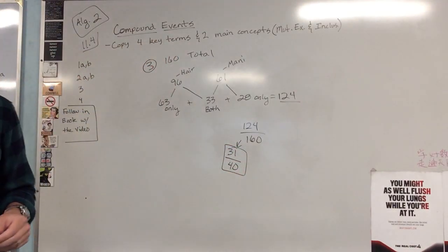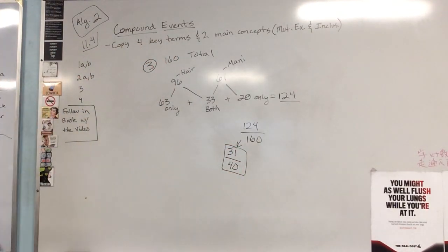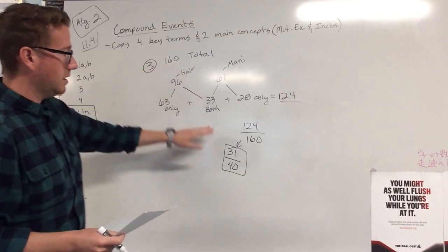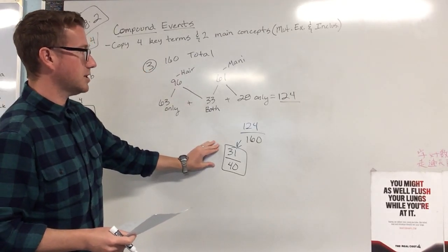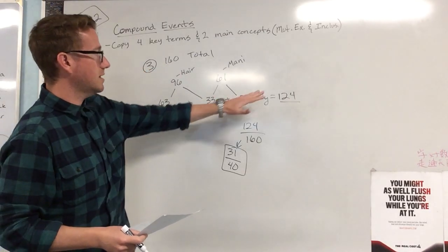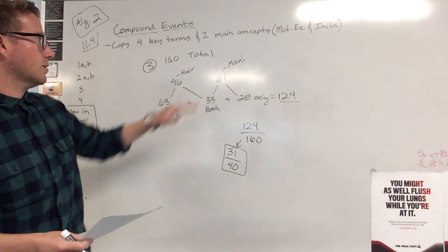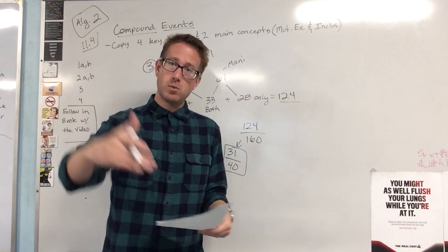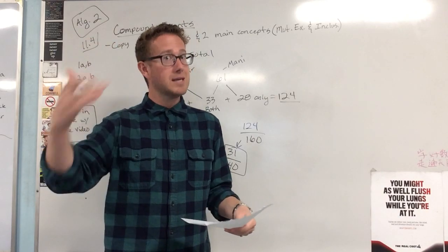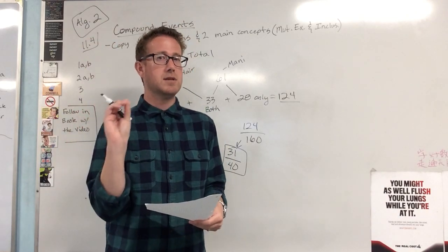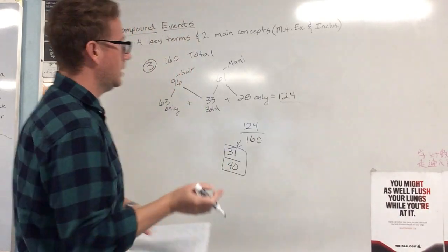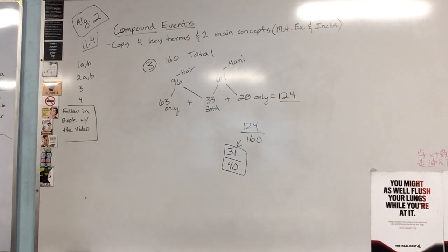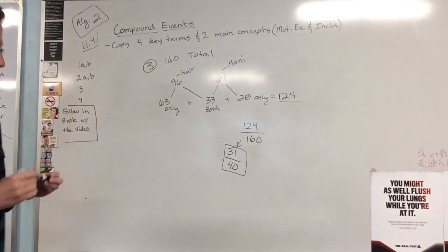124 out of 160 total customers reduces to 31 over 40. That is the probability that someone who went into the salon had a manicure or a hairstyle. Take the time to copy this down and re-watch it, because you've got to understand this process.